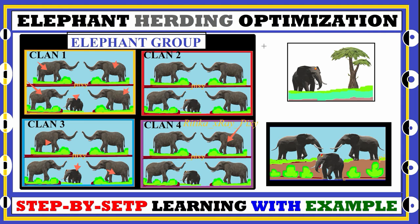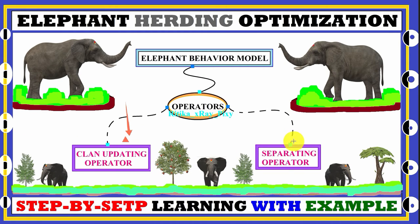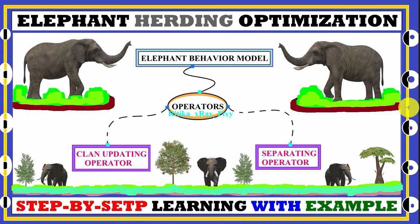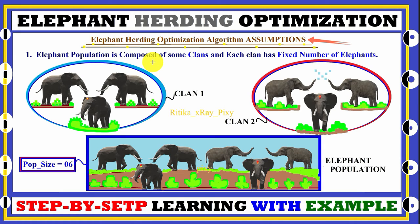Female elephants prefer to live in family groups, but male elephants live in isolation — they either live alone or with other male elephants. So the clan updating operator is based on elephant group behavior, and the separating operator is based on male elephant isolation. For algorithm simplicity, different assumptions are used, since real life is quite different from the virtual environment.